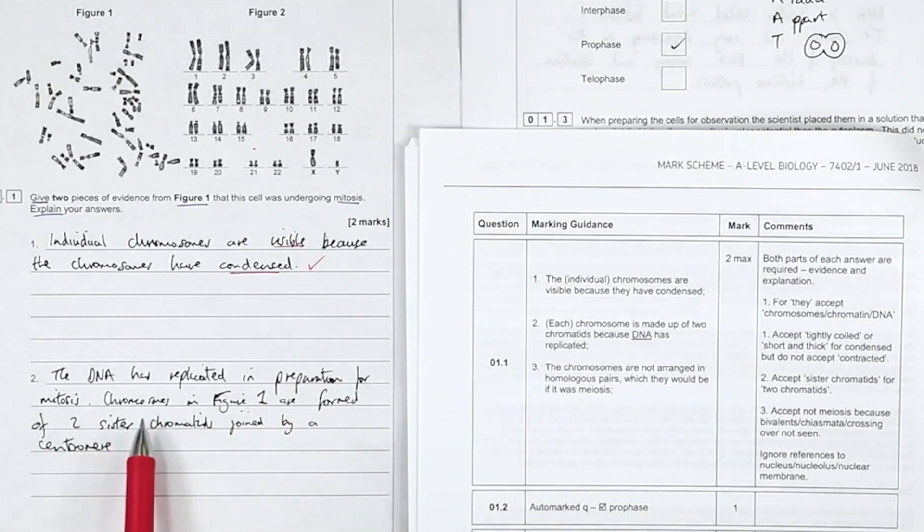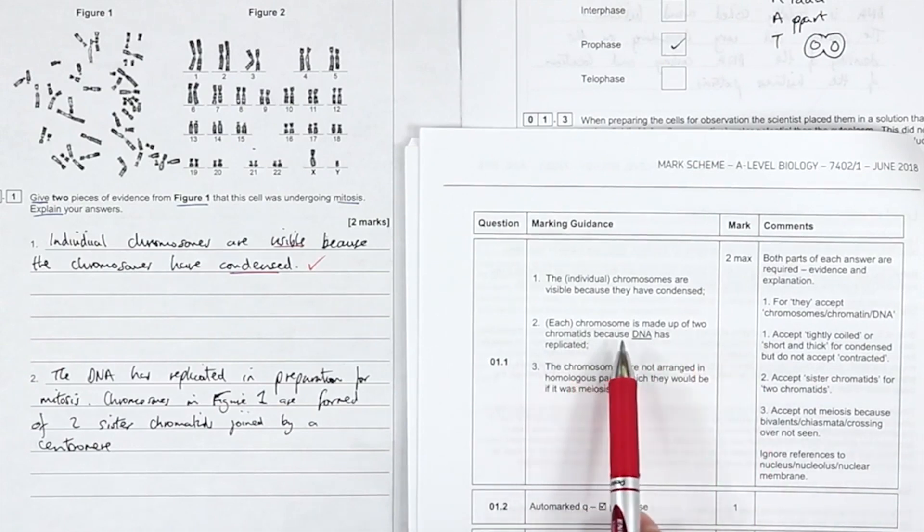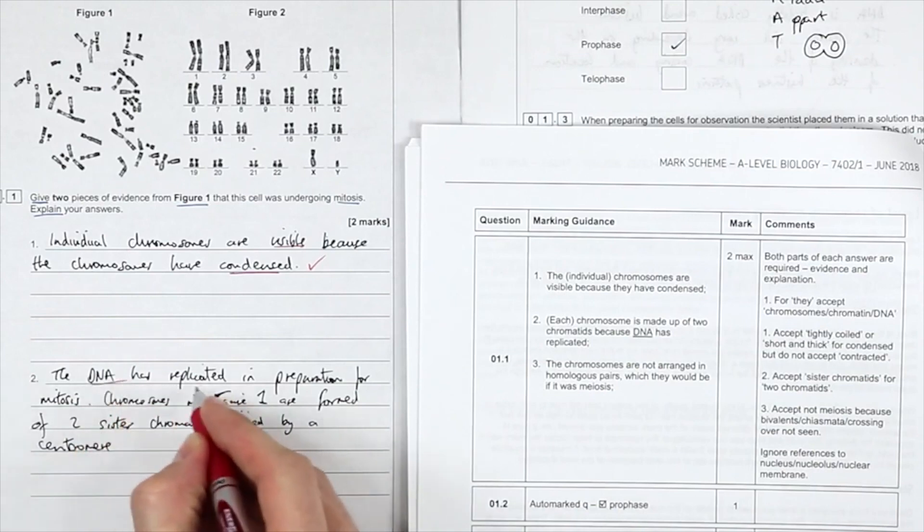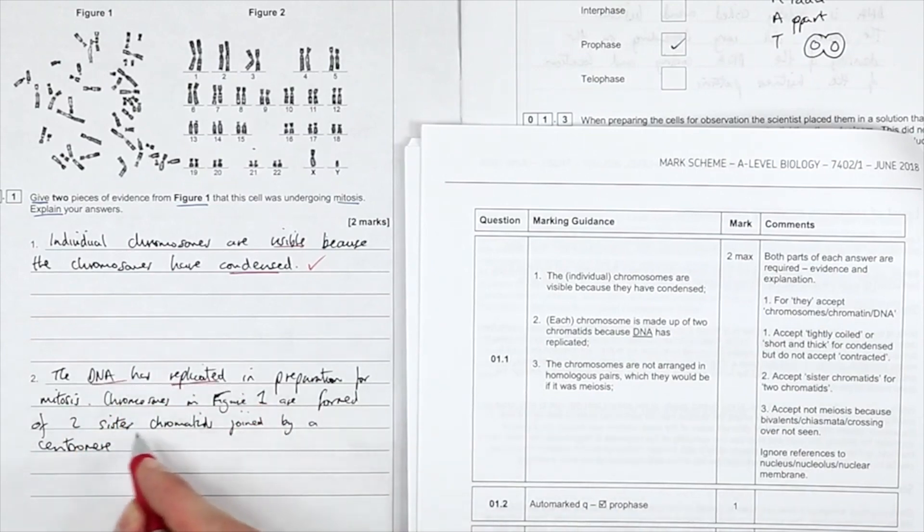DNA is replicated in preparation for mitosis. Chromosomes in figure 1 are formed at two sister chromatids joined by a centromere, made up of two chromatids because DNA has replicated. So you had to get replication in there. Two sister chromatids. I wrote down centromere. Initially, that was what I was going to write, the centromere, because that sort of connects the two sister chromatids.